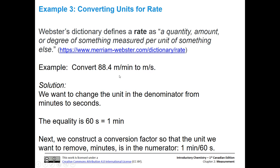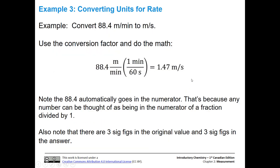Notice we're leaving the meters the same — we're just converting the time unit. That's going to give us a little bit different type of problem than we've had before. Remember our equality: 60 seconds is equal to one minute. We want to put together a conversion factor so that the unit we want to remove, which is minutes, is in the numerator.